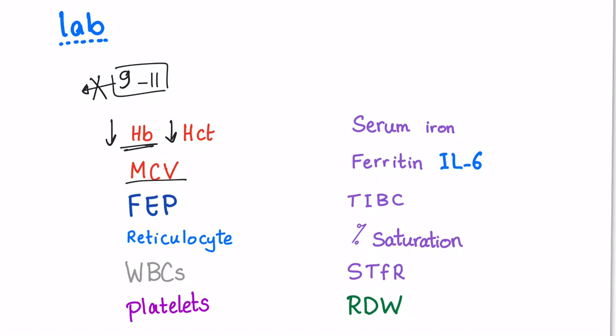MCV. That's a tricky one. Usually normocytic. Sometimes microcytic, especially when we have rheumatoid arthritis or Crohn's disease. Why? I don't know. But usually, most of the time, it's normocytic.